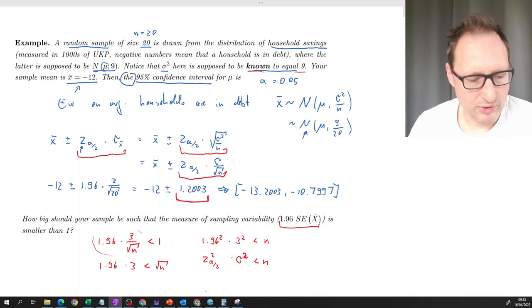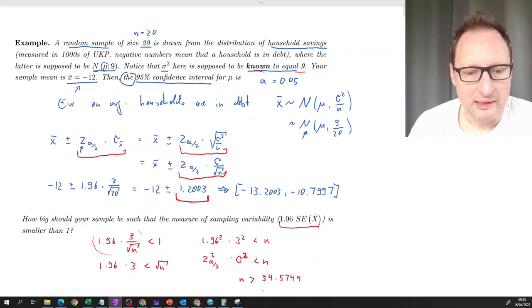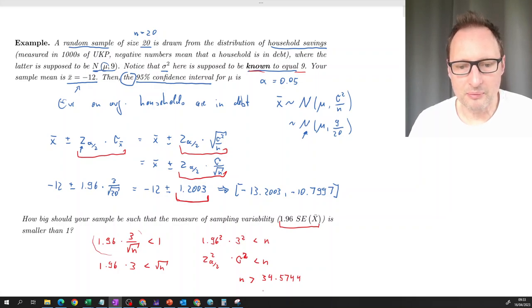So in our case, when once you calculate that, what you get is that n should be larger than 34.5744. That means you can't have a sample size of 34.5. You either have 34 or 35. Now, if you use 34, this guy would be just larger than 1. So as we want it to be smaller than 1, what we actually have to use here is a sample size of 35.